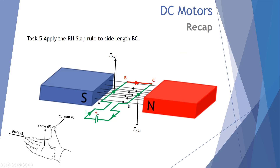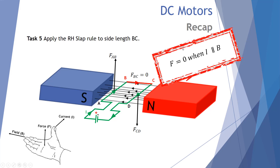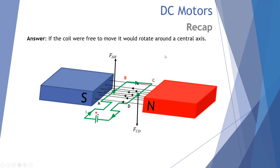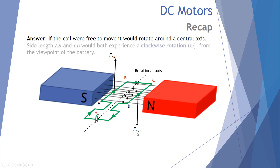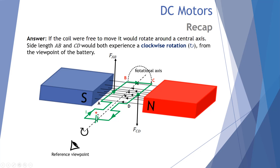Now let's look at length BC. It also has current running through it in the presence of a magnetic field, but there's a net force of zero on BC because the current running through this wire is parallel to the magnetic field, generating no force whatsoever. So if the coil were free to move, it will rotate around a central axis. Force on AB pushes it up, force on CD pulls it down, so AB and CD both experience a clockwise rotation. This is the basis of how a motor works.